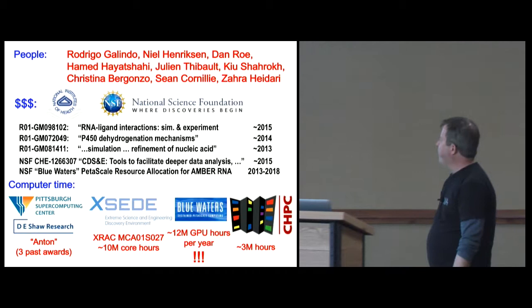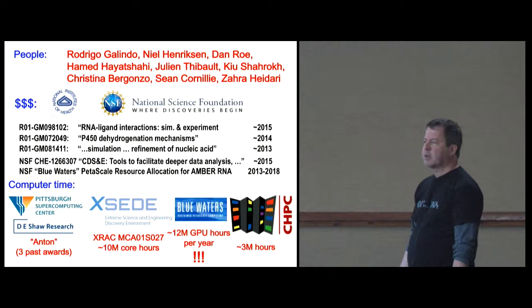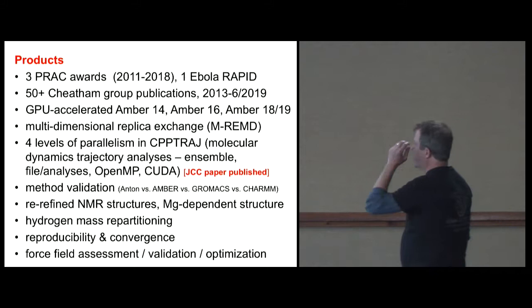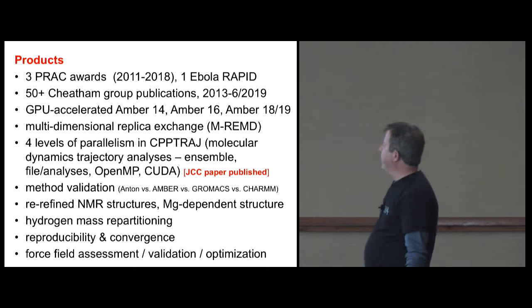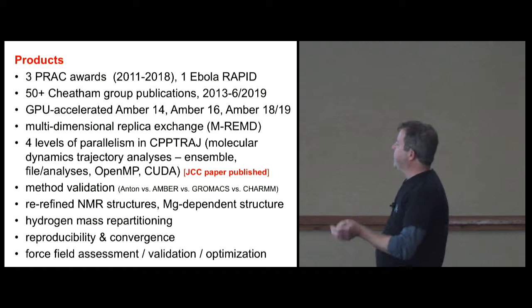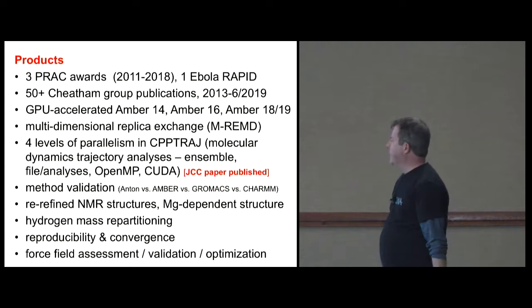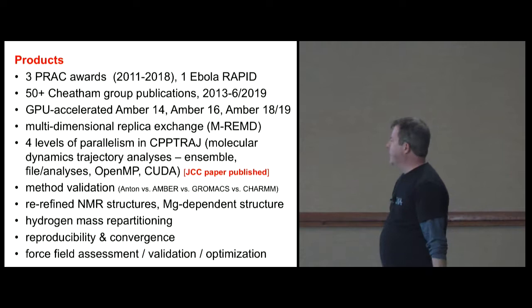People in my lab over the number of years, various funding from various places, the Blue Waters time was just phenomenal to allow us to do things. We were one of the few groups that used all our allocation every year almost. Kind of the products, I showed this last year, but the machine didn't come in production until about 2013, I think. We got more than 50 publications over that time. Amber has evolved from Amber 14 up to Amber 19 now with massive GPU acceleration. We learned about multi-dimensional replica exchange, paralyzed the analysis codes, compared Amber to GROMACS to CHARMM to Anton and showed they were the same. We refined NMR structures, learned to use longer time steps, showed reproducible convergence and could do force field assessment validation and optimization.